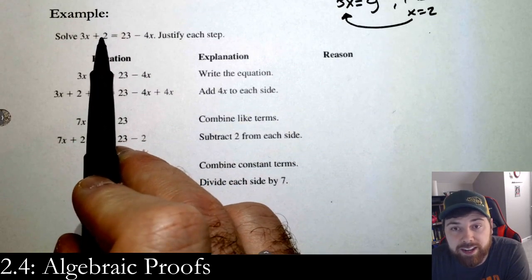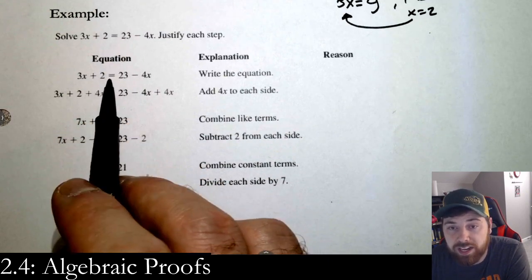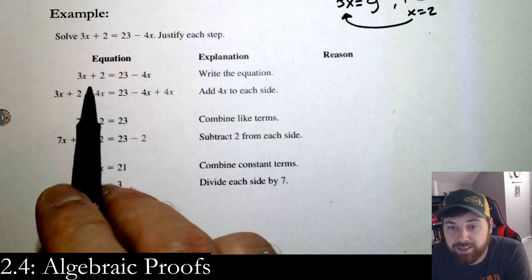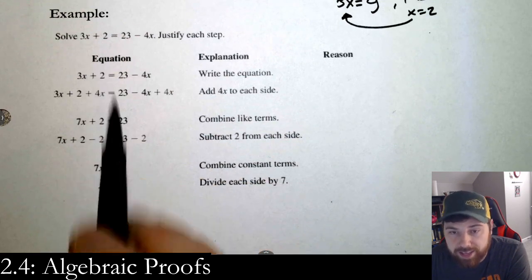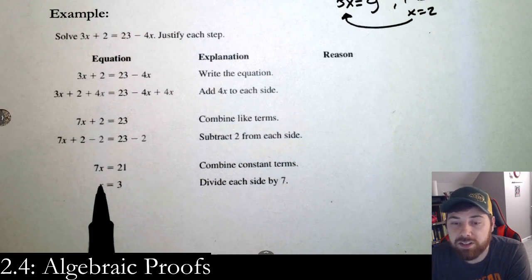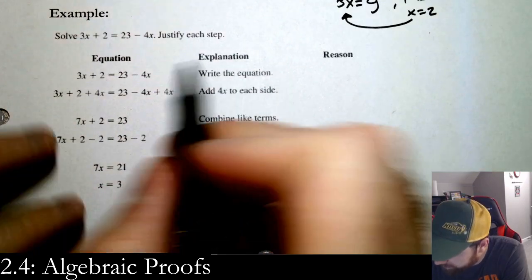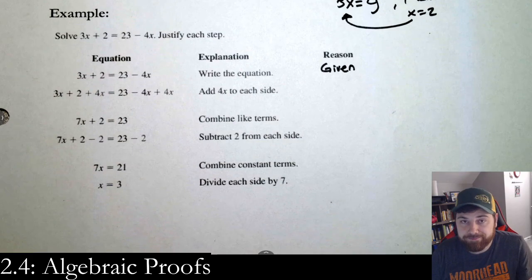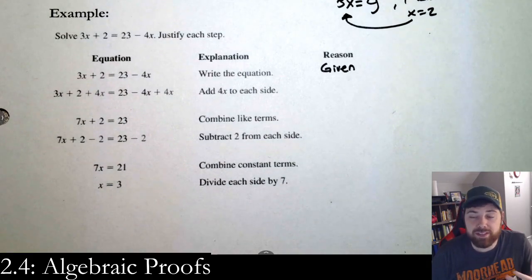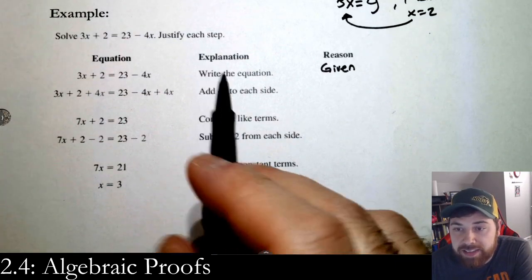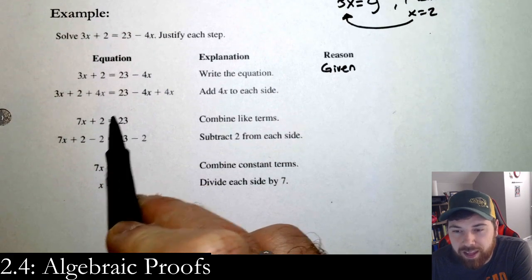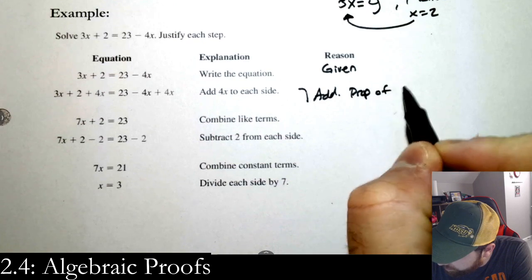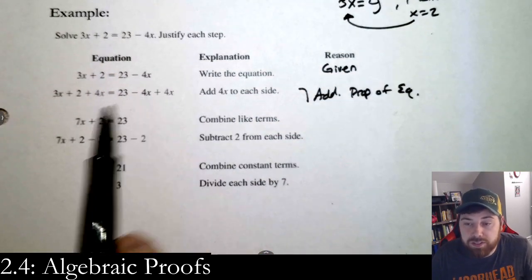This equation should be very simple to solve. The steps are laid out here. First, get the x's on one side — add 4x to each side, then simplify. The first statement is given to you, so the reason is 'given.' You always start proofs with 'given.' Now adding 4x to each side — the reason you're allowed to do that is the addition property of equality. We're adding the same thing to both sides.